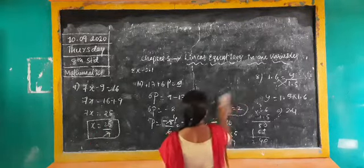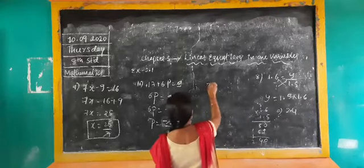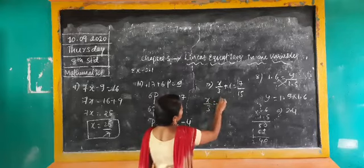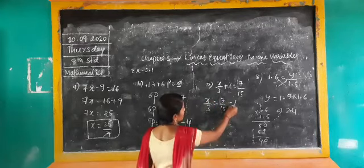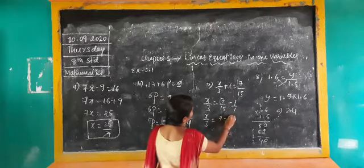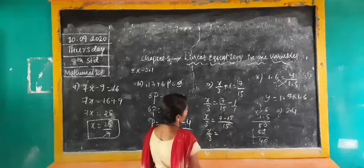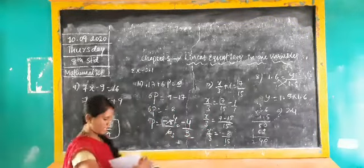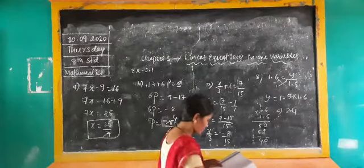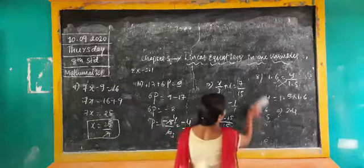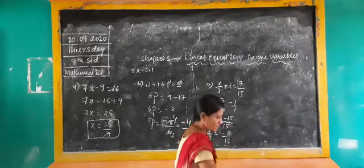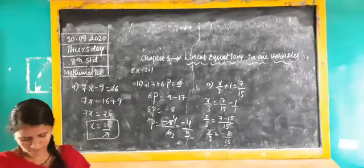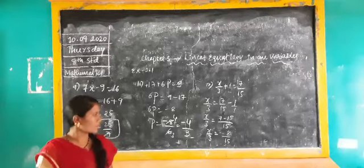Twelfth and last question: x/3 plus 1 is equal to 7/15. Keep x/3 aside — x/3 equals 7/15 minus 1, which equals 7/15 minus 15/15, giving minus 8/15. So x equals minus 8/5. I think all of you understood all twelve problems. I will explain again tomorrow. Homework: solve the third, seventh, and tenth questions at home. Thank you.